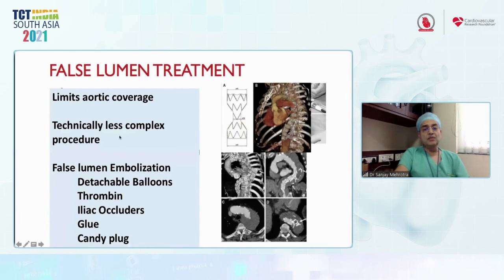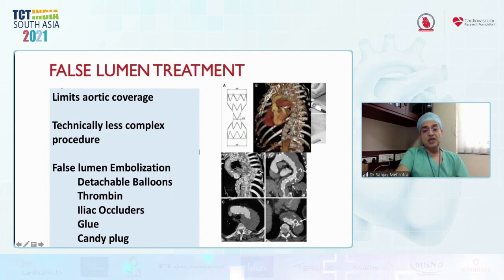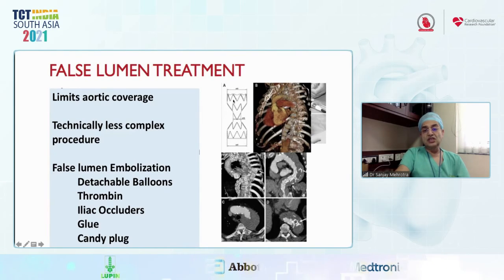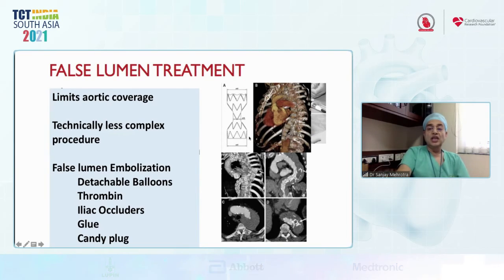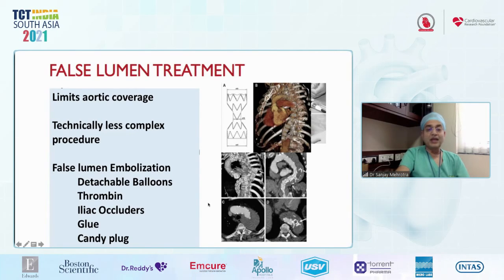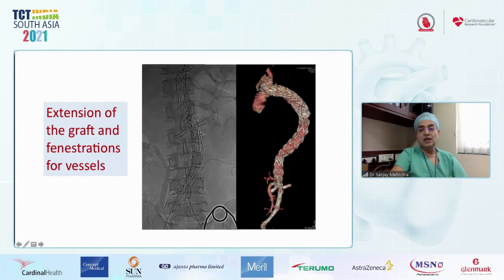False lumen treatment is a less complex procedure: options include false lumen embolization, detachable balloons, thrombin injection, iliac occluders, glue, and the candy plug. The candy plug is placed from the true lumen into the false lumen to obstruct the entry and then a stent is placed to prevent flow back into the false lumen.